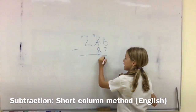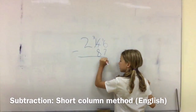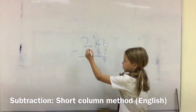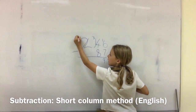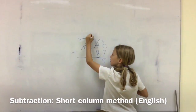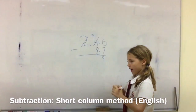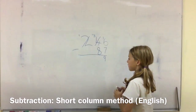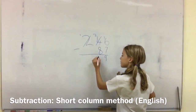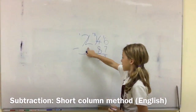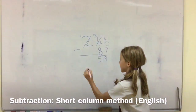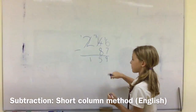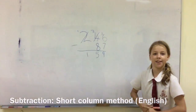So 16 take away 7 is 9. 3 take away 8, can't do that, so you take again. 13 take away 8 is 5, and 1 take away nothing is 1, so 159 is our final answer.